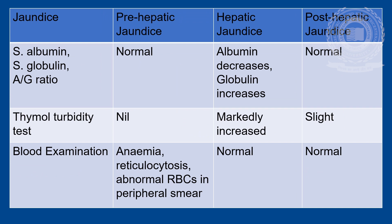Serum albumin, serum globulin and the A/G ratio are normal in pre-hepatic and post-hepatic jaundice, but in hepatic jaundice albumin decreases and globulin increases. Because of rising globulin levels, markedly increased turbidity is observed in the thymol turbidity test in hepatic jaundice, while slight turbidity is observed in post-hepatic jaundice, but no turbidity is observed in pre-hepatic jaundice. In blood examination, anemia, poikilocytosis and abnormal RBCs in the peripheral smear are observed in pre-hepatic jaundice, while normal blood examination is found in hepatic as well as post-hepatic jaundice.